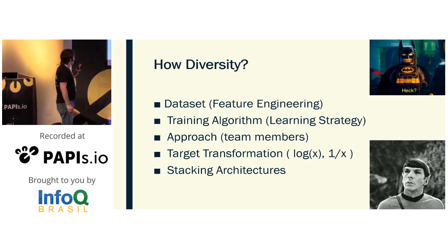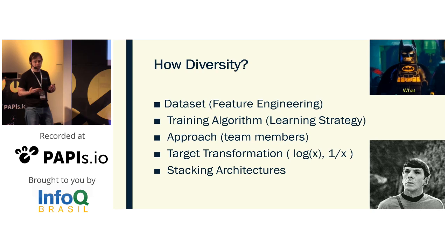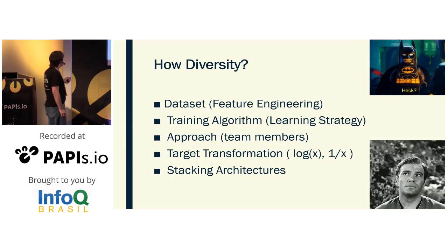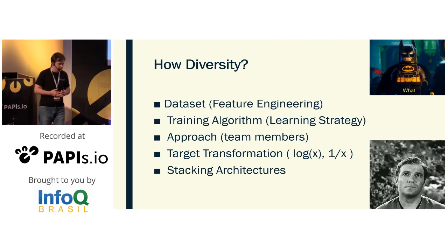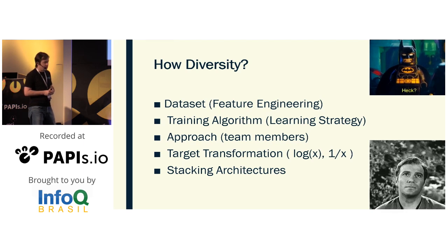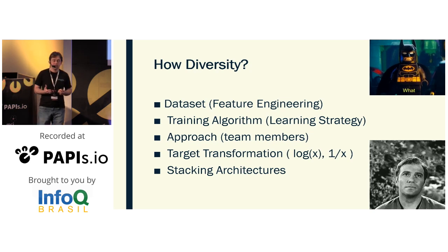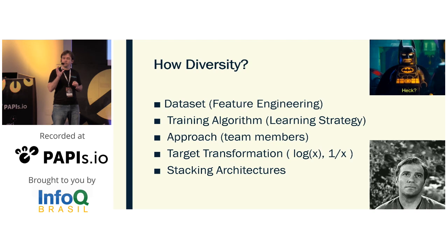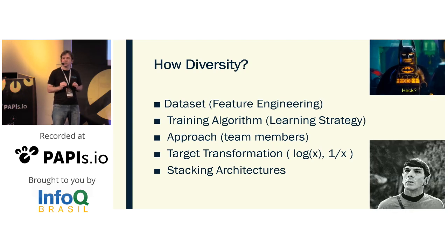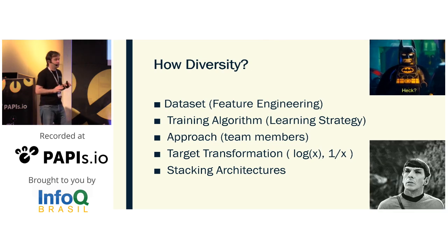How do we achieve diversity? I listed five topics we can work on. The first is dataset and feature engineering — basically data cleaning, feature preparation, feature engineering, and formatting features for different training algorithms. The second is training algorithm: you can have one dataset and train many models using the exact same data. You can train a linear model, a non-linear decision tree, a neural network — the learning algorithm itself is part of getting diversity.